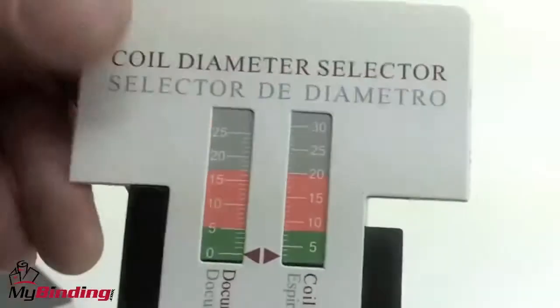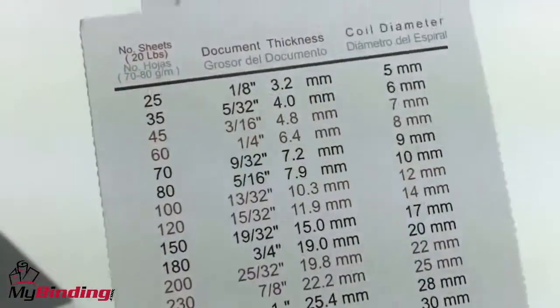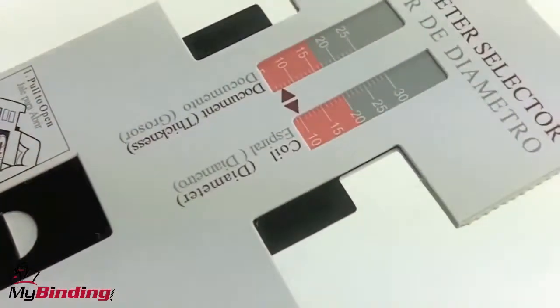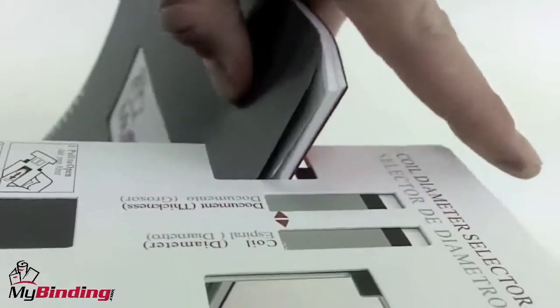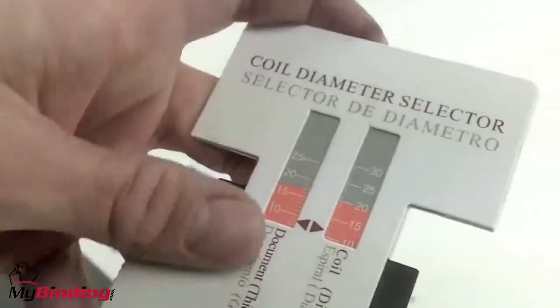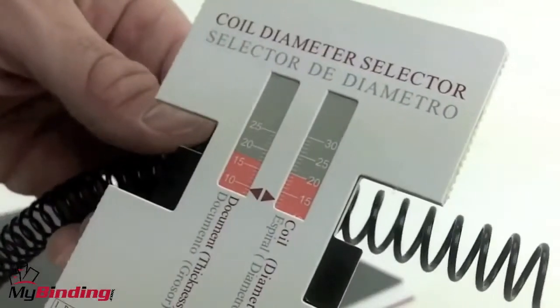All CoilMac machines come with a coil diameter selector. This is just a simple tool whereby you can judge the size of coil that you'll need for your project. One side you measure your project and get your reading, set the other side, and select your coil according to that size.